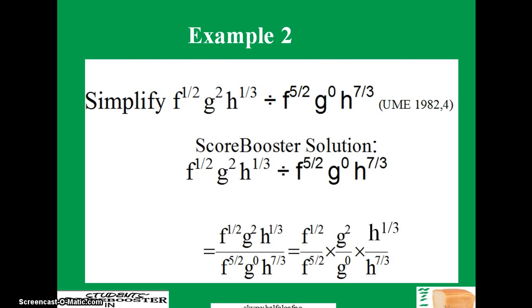Let's look at another example. This time we are taking from UME, I mean what is presently called UTME. Let's look at this. Simplify f raised to power f, g raised to power 2, h raised to power 1 over 3, all divided by f raised to power 5 over 2, g raised to power 0, h raised to power 7 over 3.